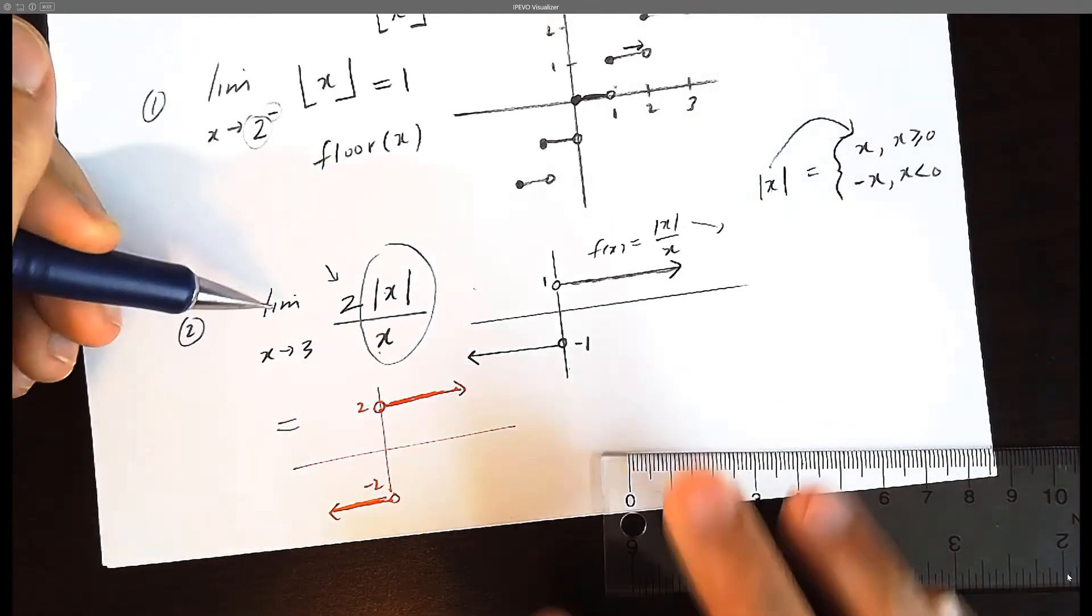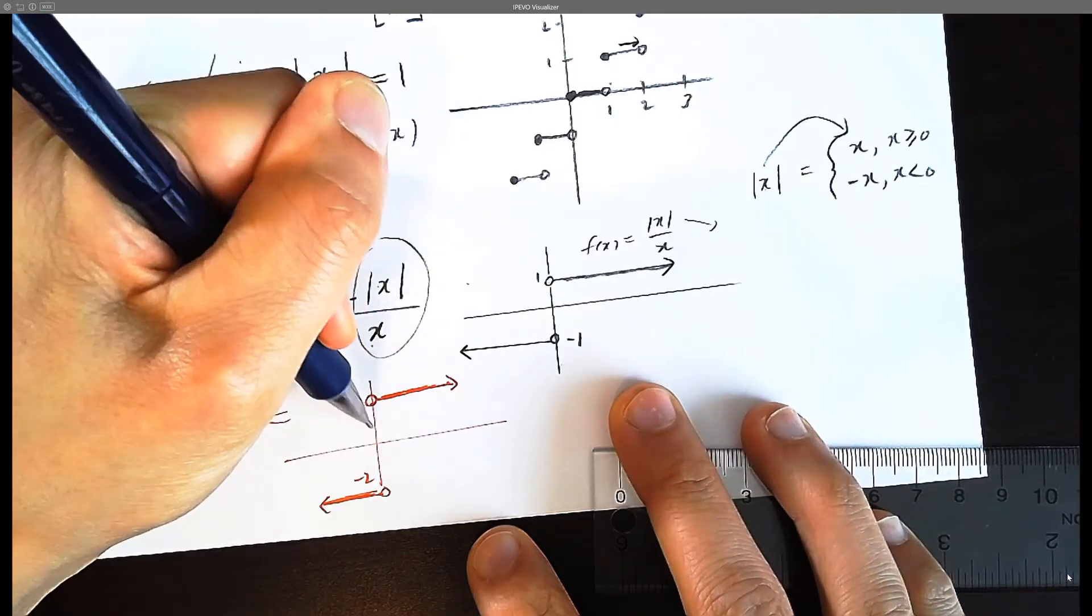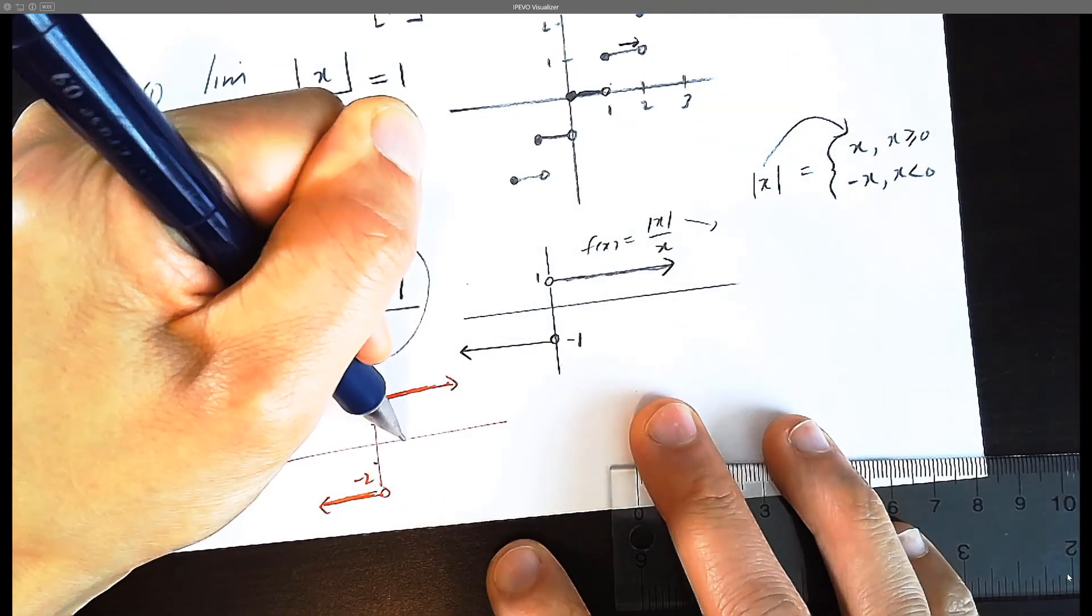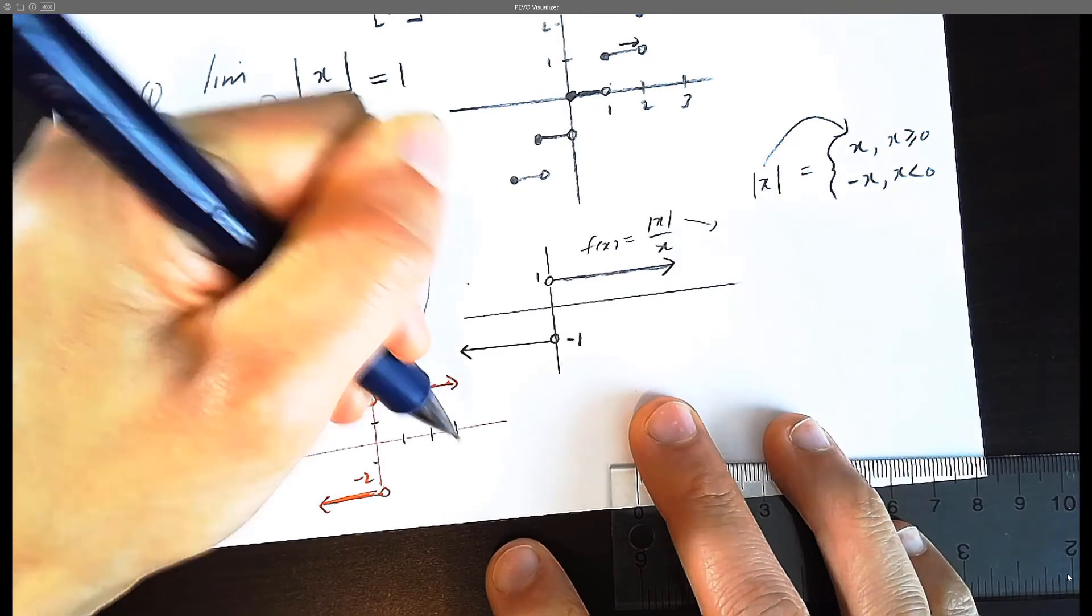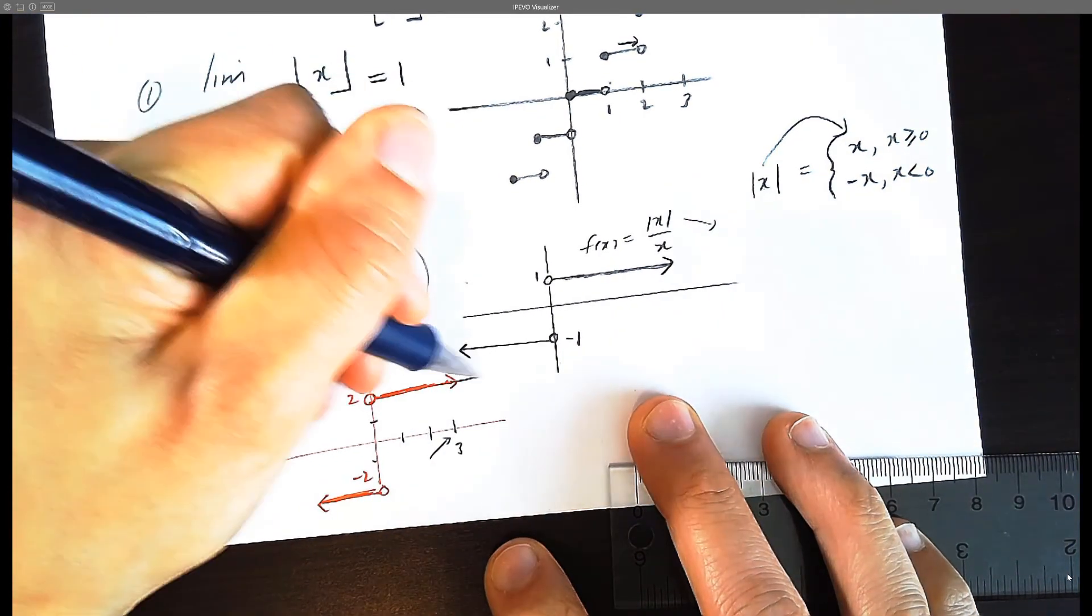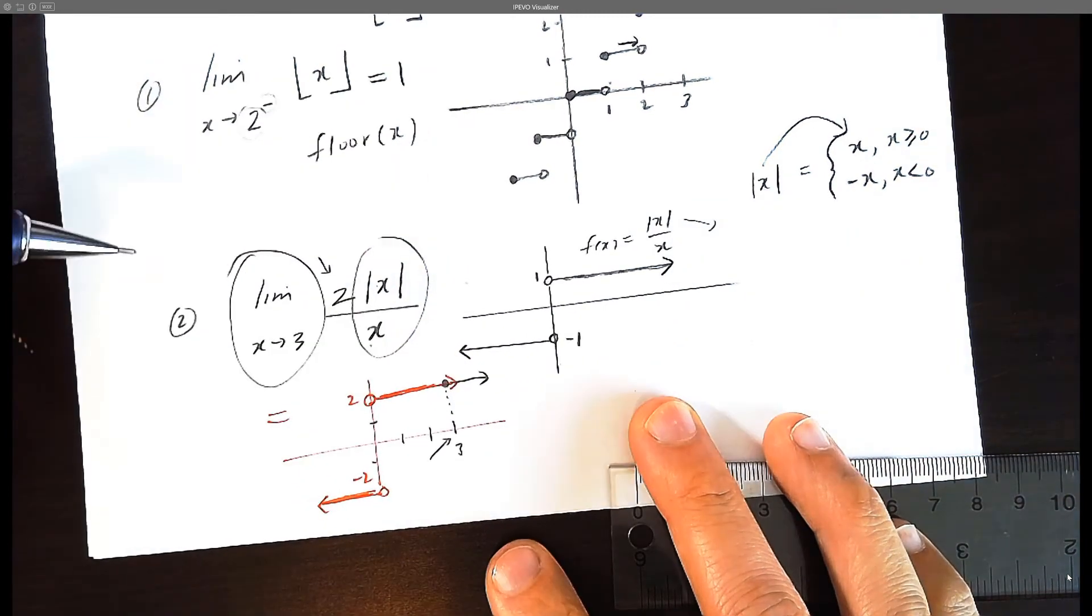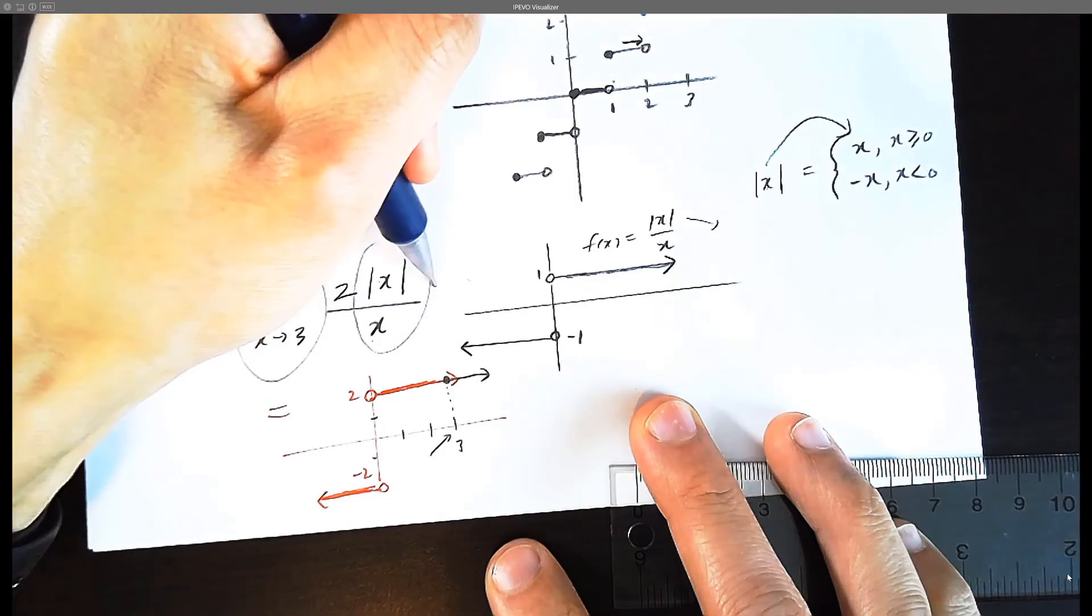Now that we sketched this function, we should actually answer the question. What is the limit as x approaches three? So let's focus here. This is going to be positive one, positive two, positive three. As x approaches three, what is the y value? The y value is up here and the limit is going to be two. The answer is going to be two.